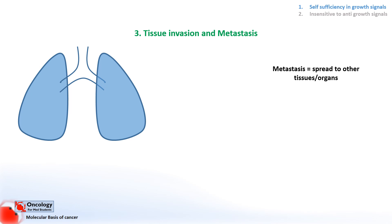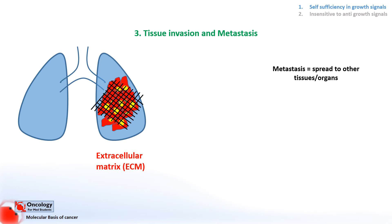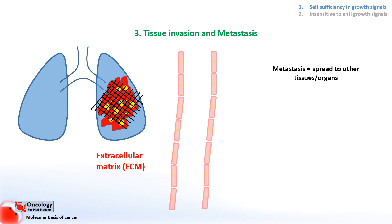If we look at any tissue in the body — in this case we have lung tissue — we can see that it isn't just made up of only cells. Outside of the cells we see collections of proteins and carbohydrates that form something called the extracellular matrix. The extracellular matrix is made by the cells in the tissue, and the cells that create it bind to it, which keeps the tissues in the right structure.